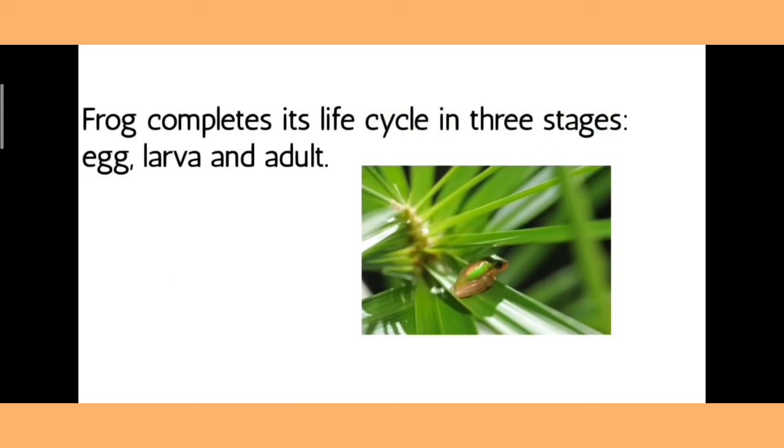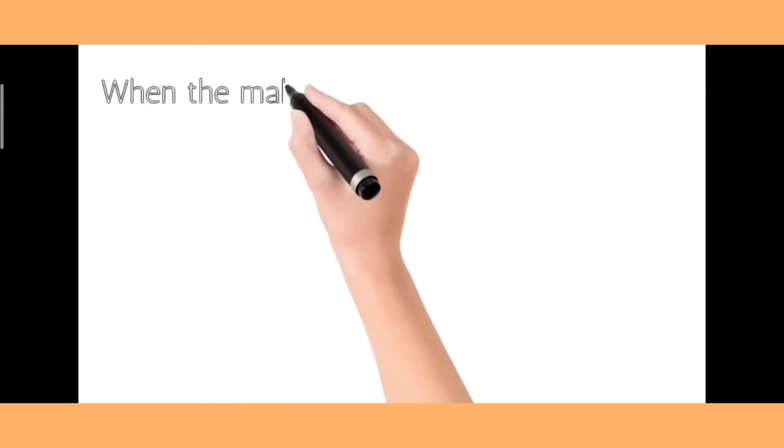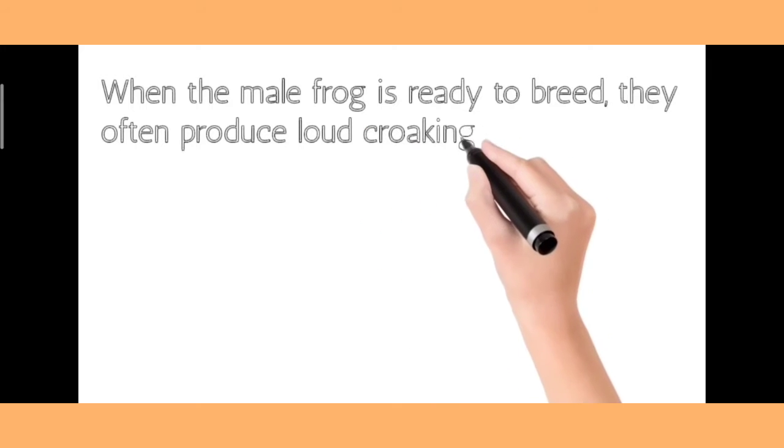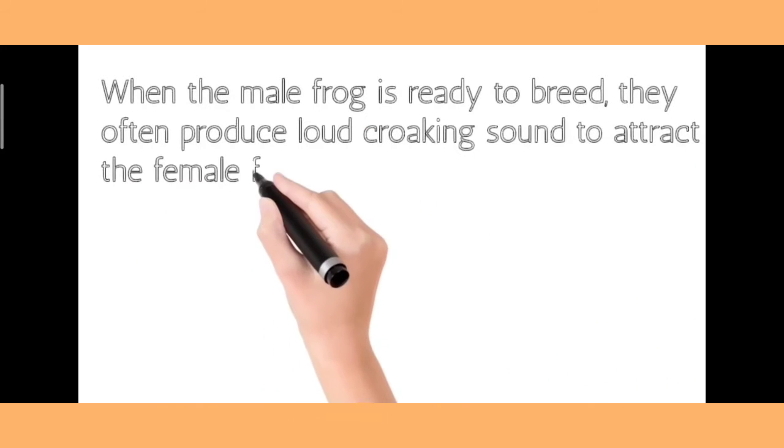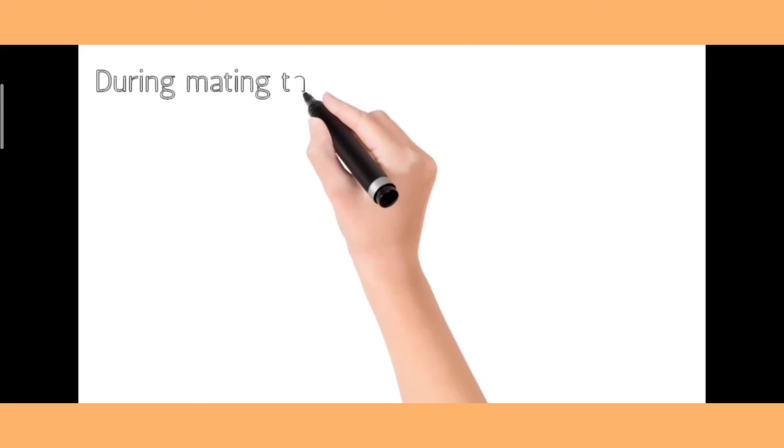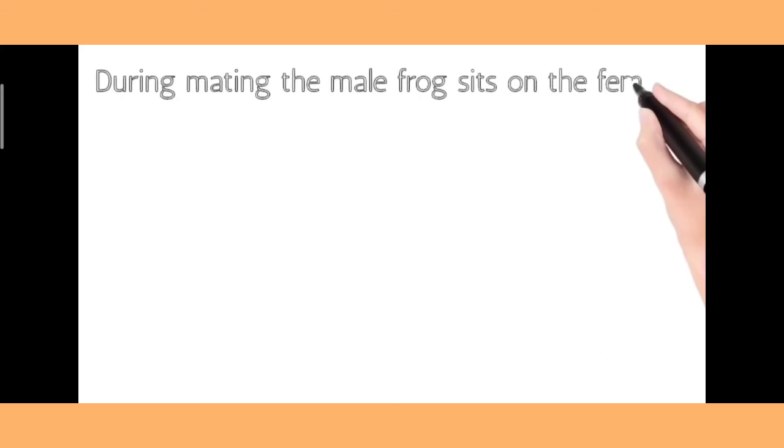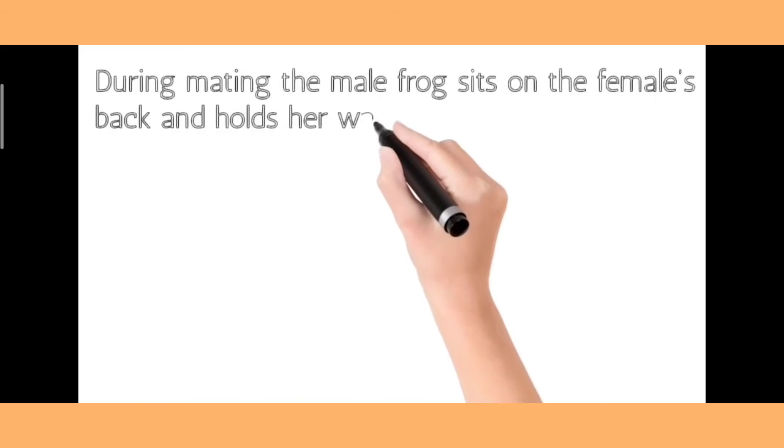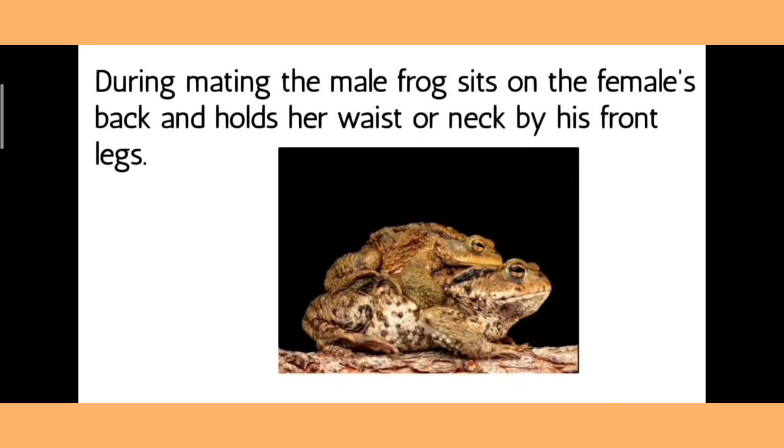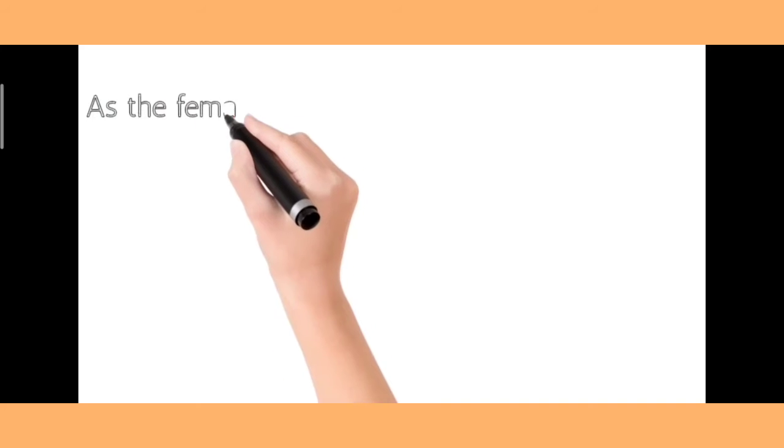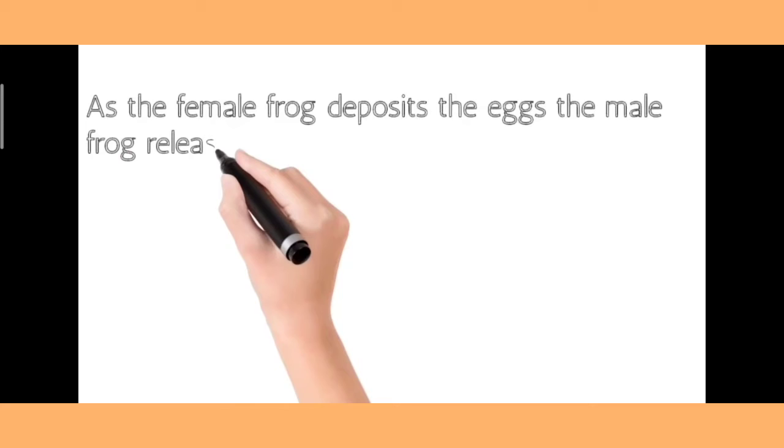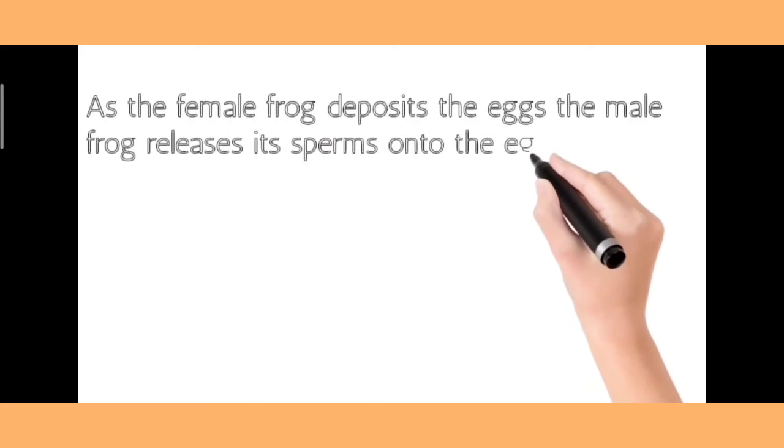When the male frog is ready to breed, they often produce loud croaking sounds to attract the female frogs. During mating, the male frog sits on the female's back and holds her waist or neck by his front legs. As the female frog deposits the eggs, the male frog releases its sperm onto the eggs.